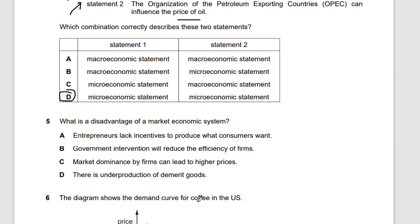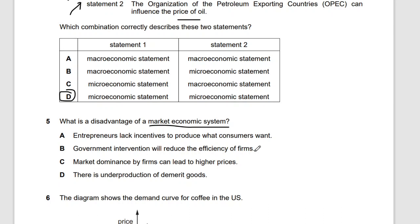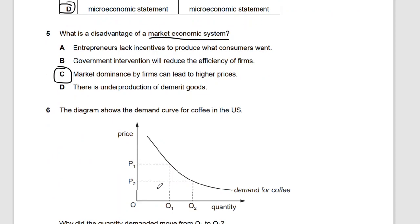Question five: what is a disadvantage of the market economic system? The answer is C — market dominance by firms can lead to higher prices. This is called monopoly. Monopolistic companies like Coca-Cola dominate the soda market and can set higher prices, which is a key disadvantage of the market economic system.